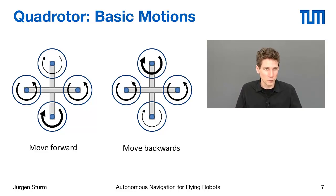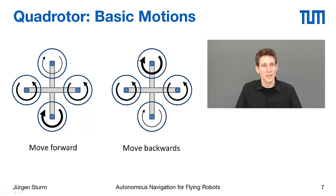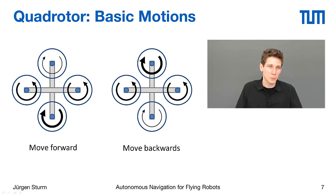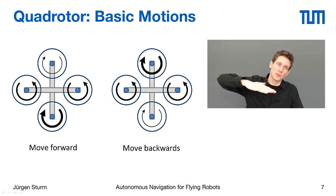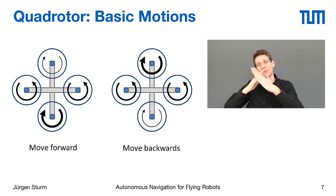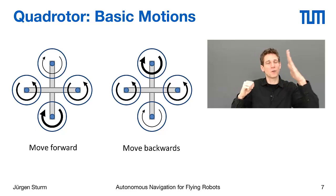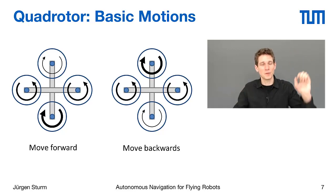For moving forward — forward in this schematic is the up direction — you reduce the speed of your front motor and increase the speed of your back motor. In this way, the quadrotor will tilt forward, and the thrust is no longer perfectly aligned with Earth's gravity but is slightly off-axis, which leads to an acceleration in the forward direction.